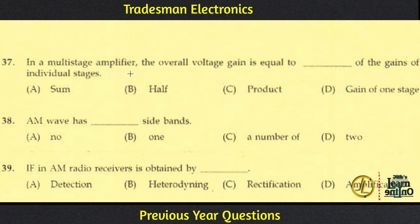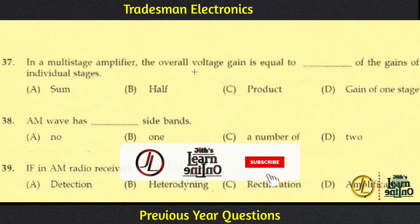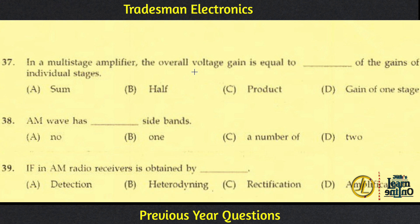In a multi-stage amplifier, the overall voltage gain is equal to the product of the individual stage gains G1, G2, and G3. The overall gain equals G1 × G2 × G3. Option C is the answer.